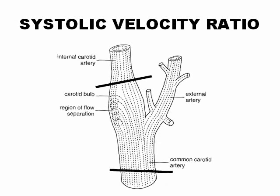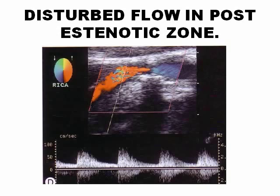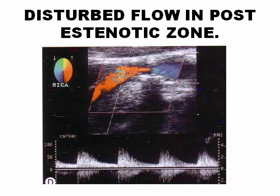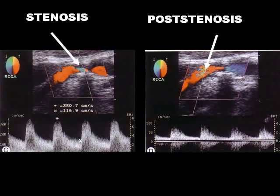The systolic velocity ratio is the relation between the velocity in the area of stenosis and the velocity in the common carotid artery. Additionally, the flow is turbulent in the post-stenotic zone. On spectral Doppler you will see negative velocities in that region, and on color Doppler you will see different color mixes — indicating turbulent flow after the stenotic area. Together, the aliasing and the post-stenotic turbulence characterize the stenosis.